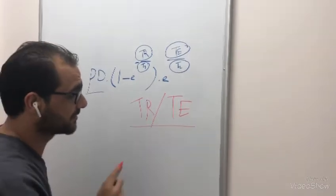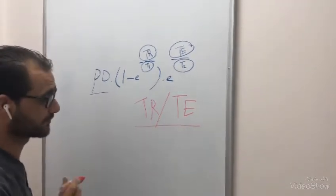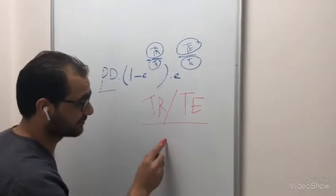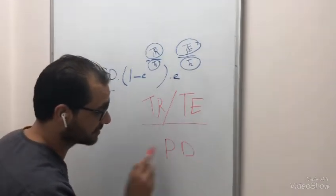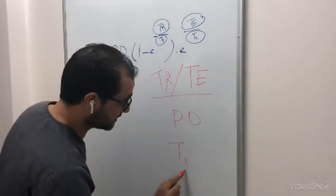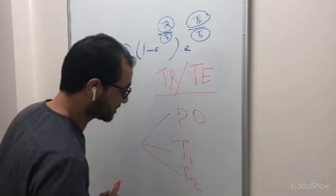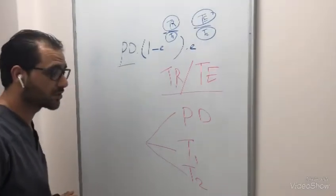And these variables, we can change and we can control. But we have proton density and T1 and T2. Three variables. These are properties of the matter.